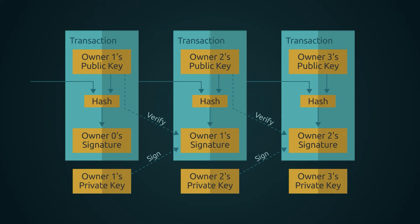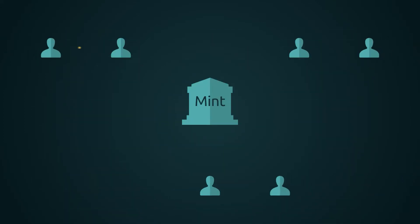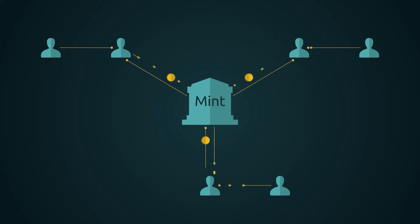The problem of course is the payee can't verify that one of the owners did not double spend the coin. A common solution is to introduce a trusted central authority or mint that checks every transaction for double spending.